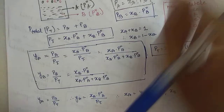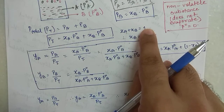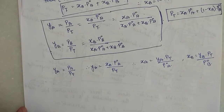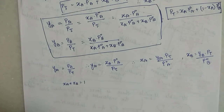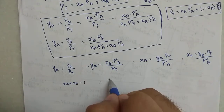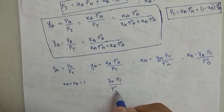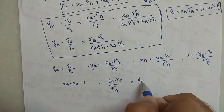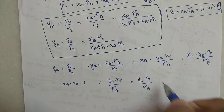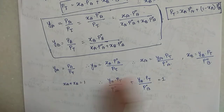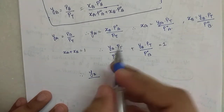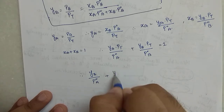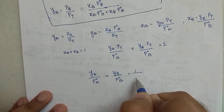We also know that xa plus xb equals 1, since there are only two components. So I can substitute: ya into P_total divided by P°A plus yb into P_total divided by P°B equals 1. Now if I divide everything by P_total, I get: ya by P°A plus yb by P°B equals 1 by P_total.